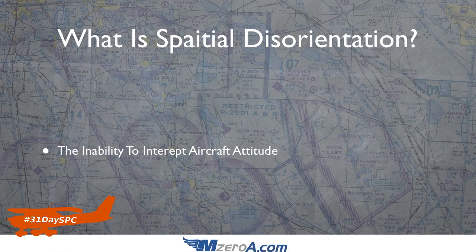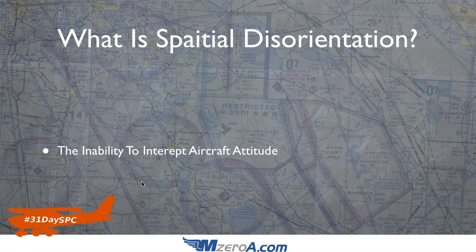So let's start with: what is spatial disorientation? The definition is really the inability to interpret the aircraft attitude. Imagine you inadvertently, as a VFR pilot, fly into a cloud. You lose the aircraft horizon. You're sitting in the seat — your body tells you one thing, your instruments are telling you another. You lost the horizon. You're completely disoriented. You don't know if you're left, right, or upside down. You are spatially disoriented. Bad situation to find yourself in.